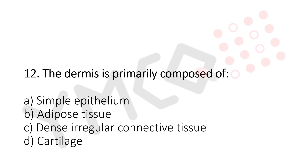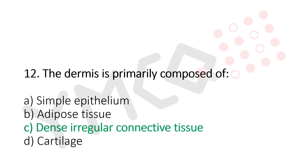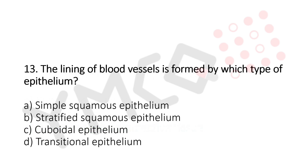Question 12: The dermis is primarily composed of — Option A: simple epithelium. Option B: adipose tissue. Option C: dense irregular connective tissue. Option D: cartilage. The answer is Option C, dense irregular connective tissue.